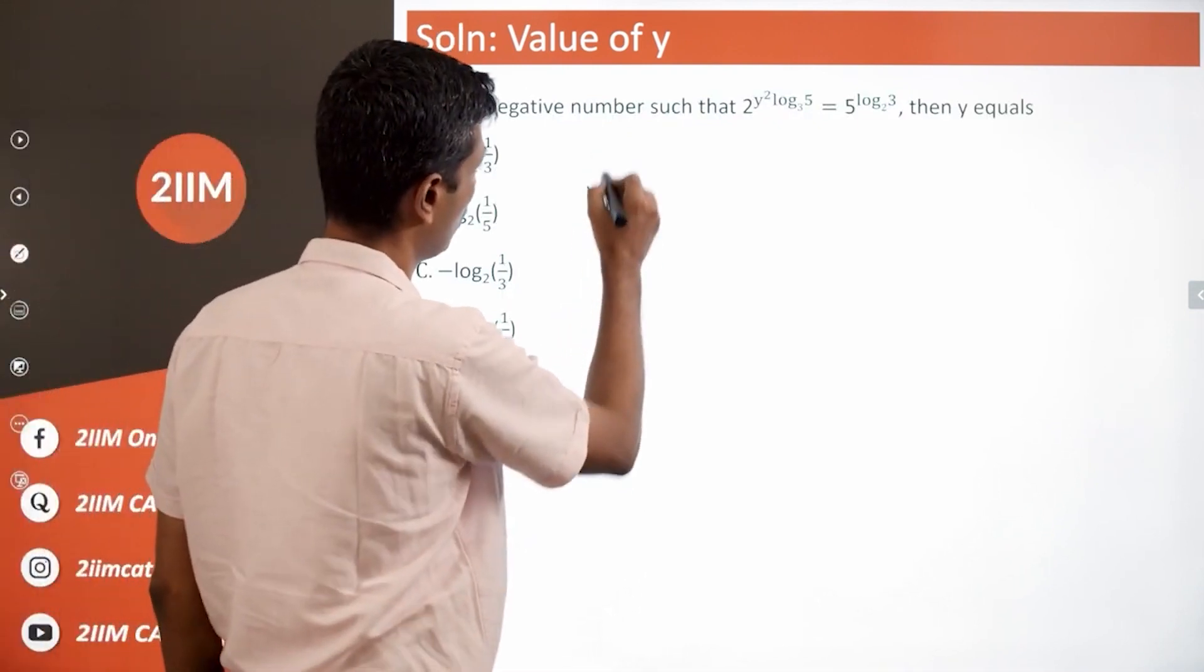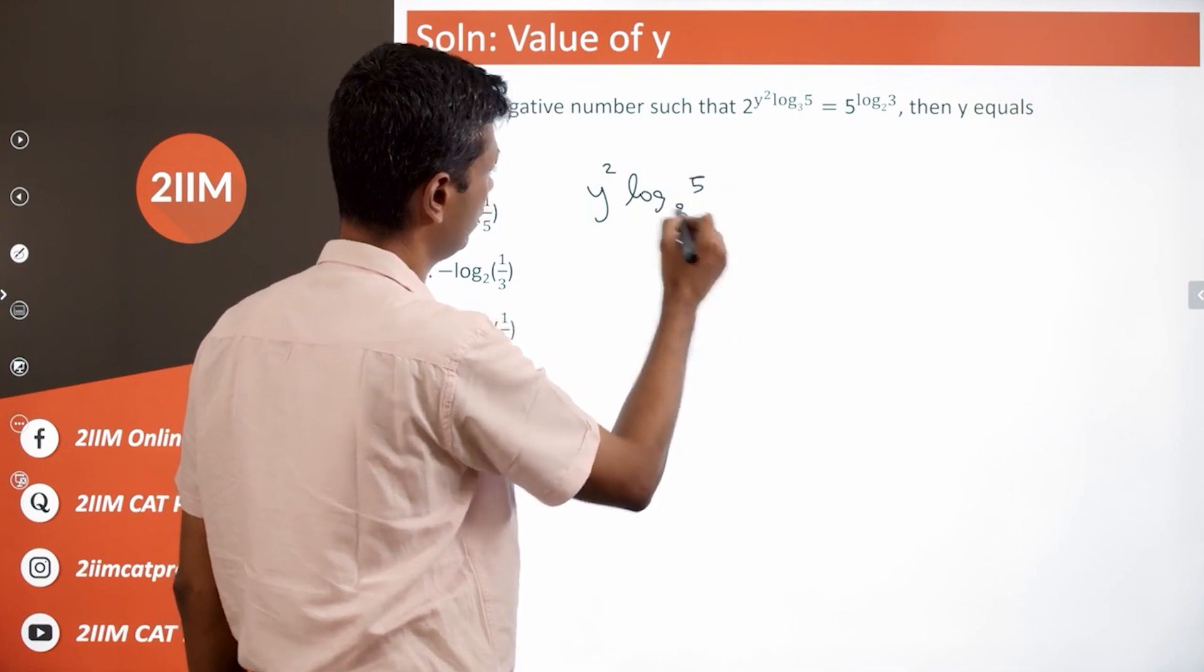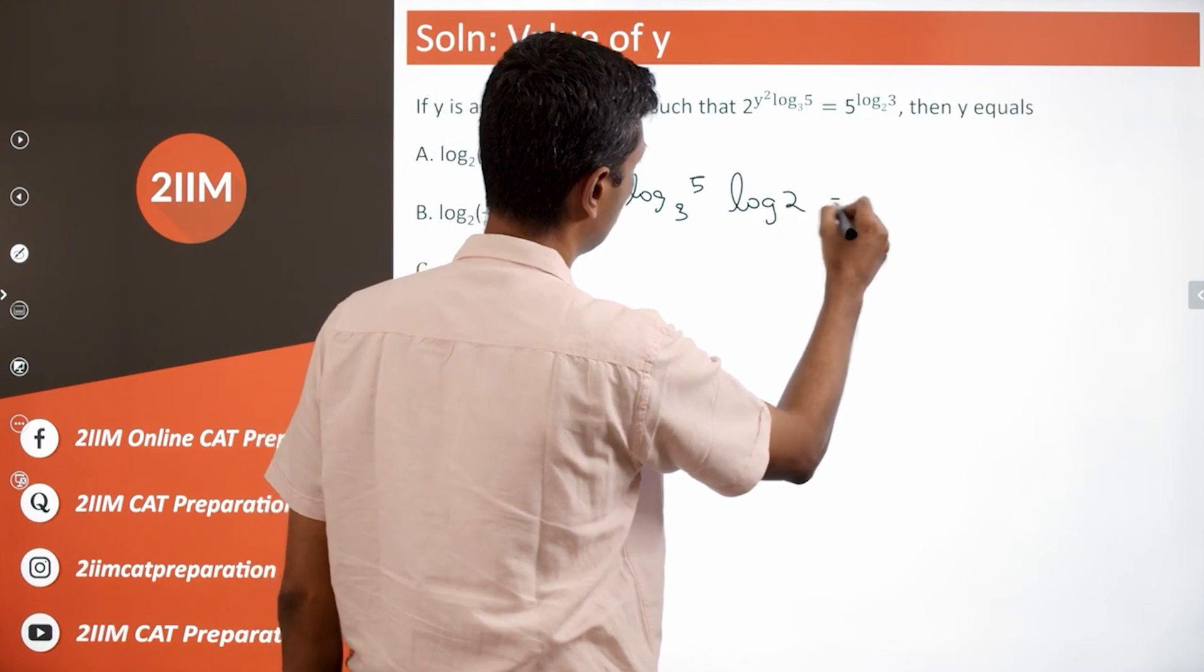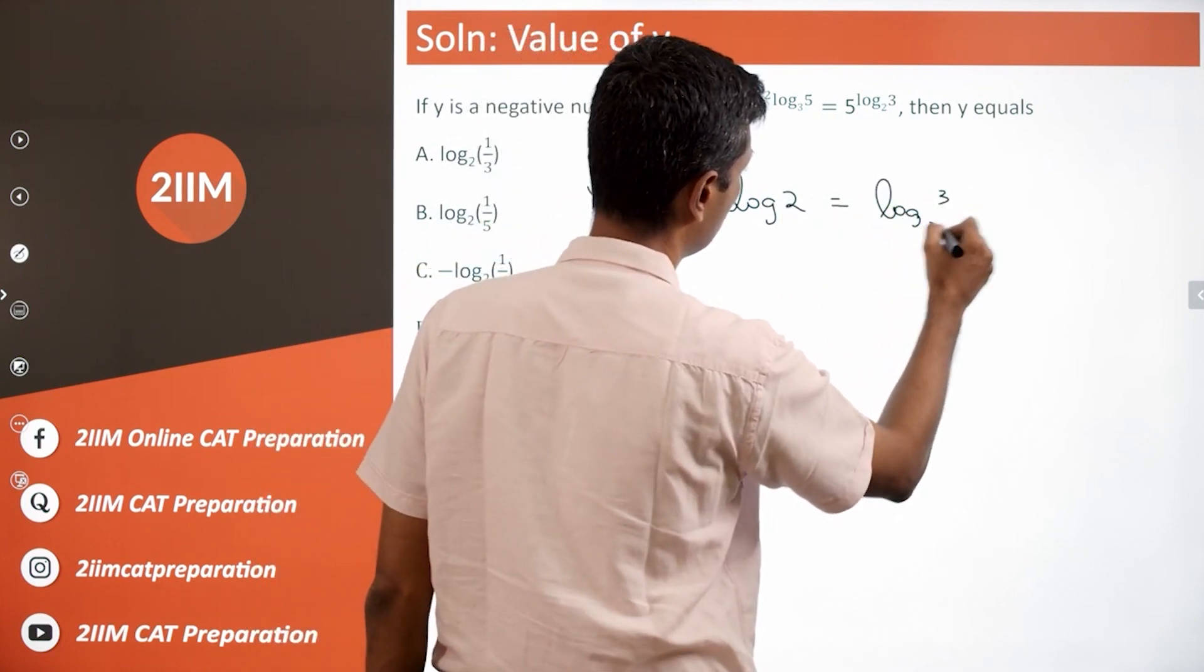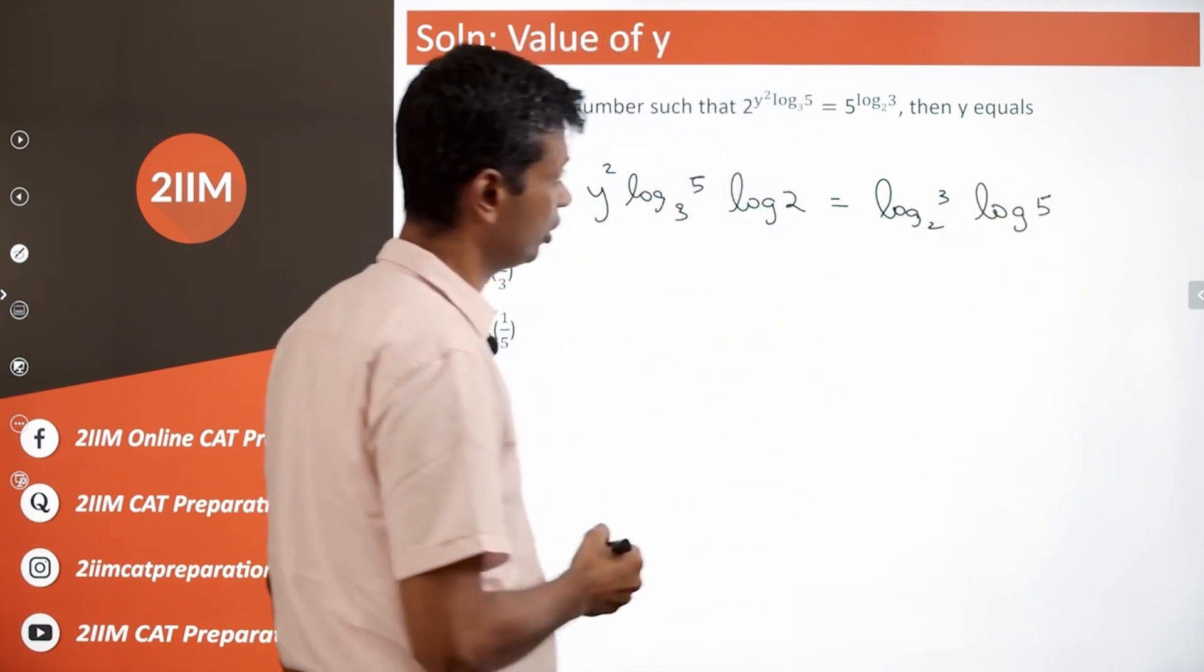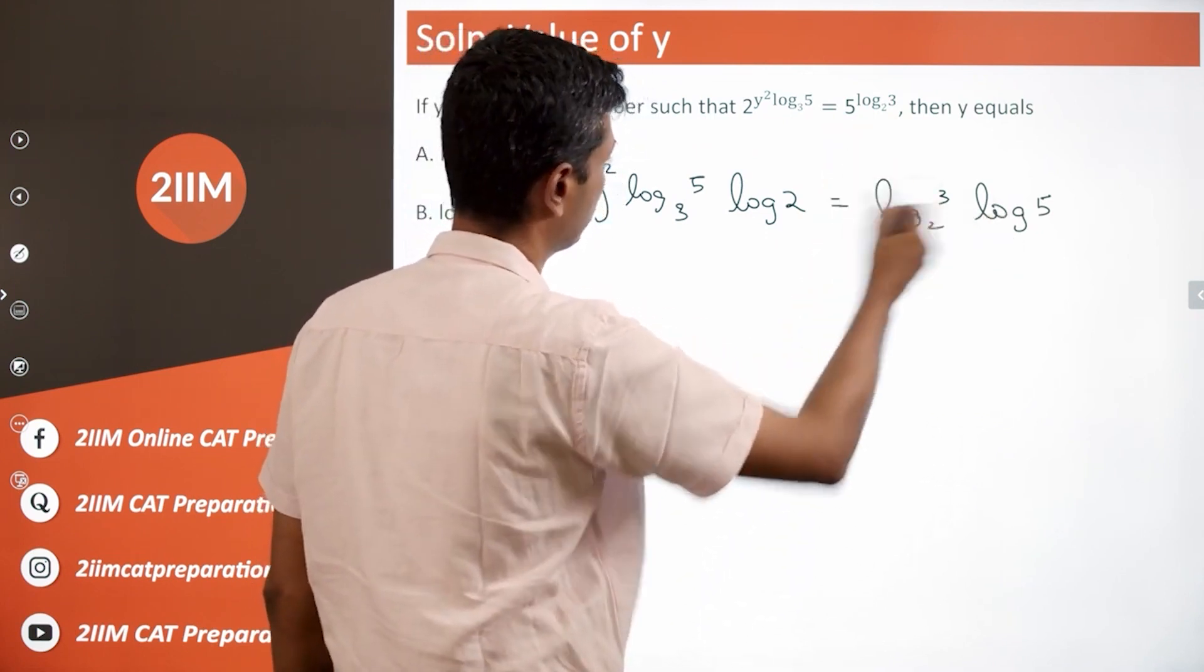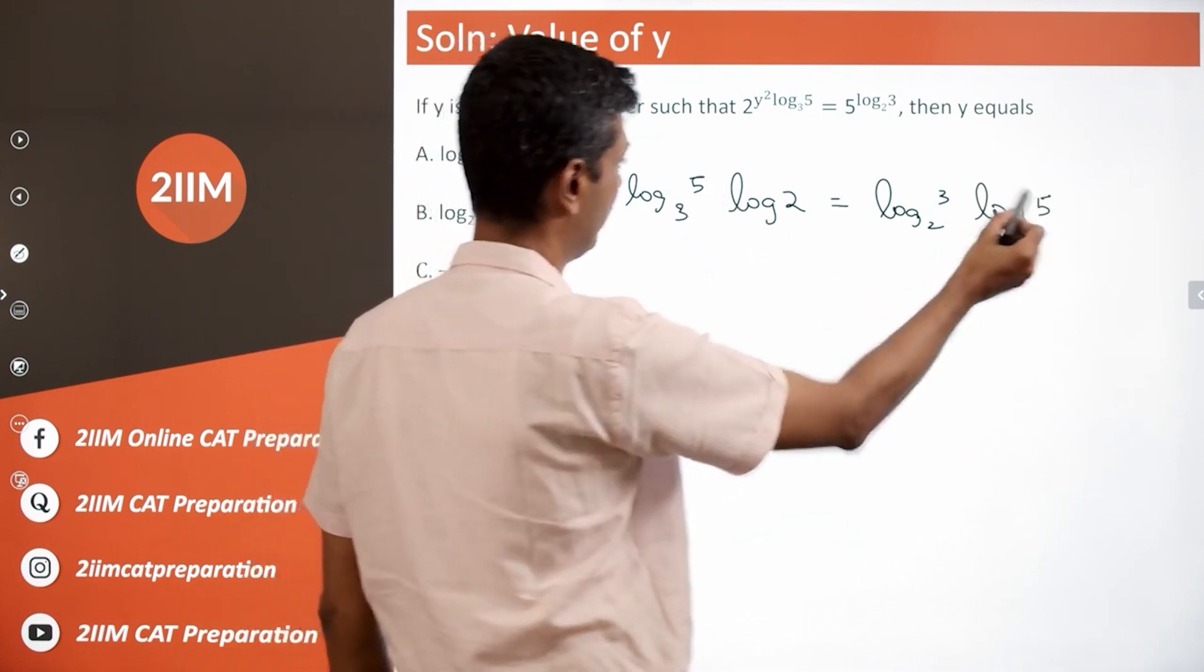This becomes y square log 5 to the base 3 times log 2 is equal to log 3 to the base 2 times log 5. This is 5 power log 3 to the base 2, so this will be log 3 to the base 2 times log 5. Log 5 to the base 3 here and a log 5 here.